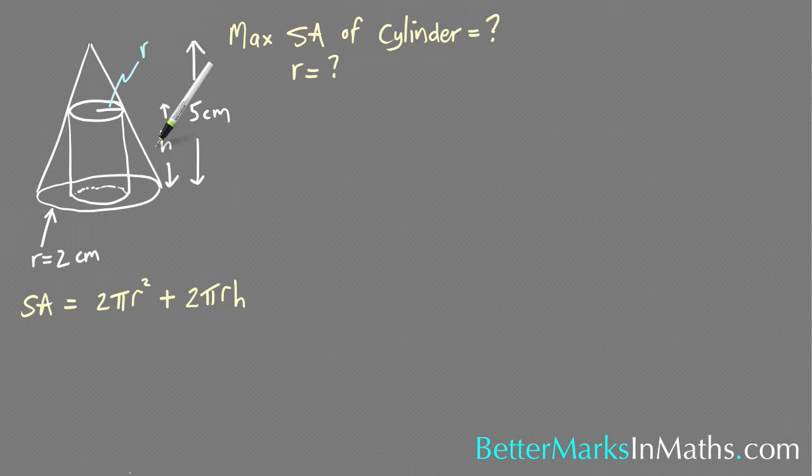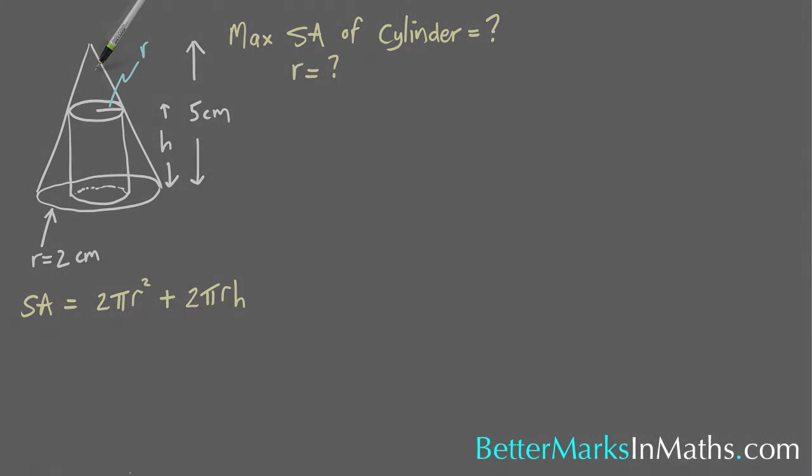So somehow you need to get a rule that connects r and h, and in this case you're going to need to use similar triangles which is usually the case in a cone type problem.